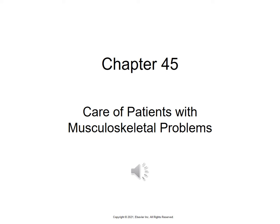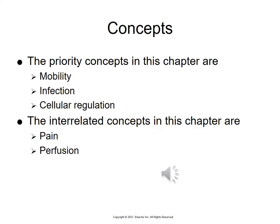Care of the Patient with Musculoskeletal Problems, Chapter 45, begins on page 983. The concepts covered are mobility, infection, and cellular regulation, with interrelated concepts of pain and perfusion.